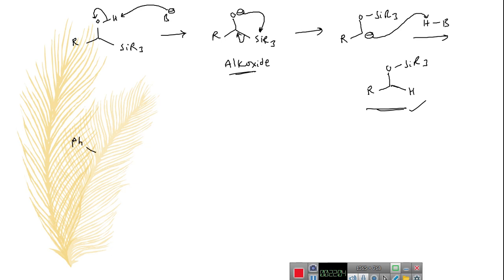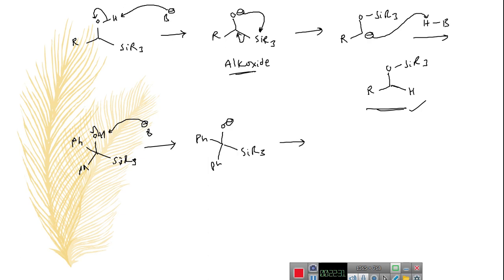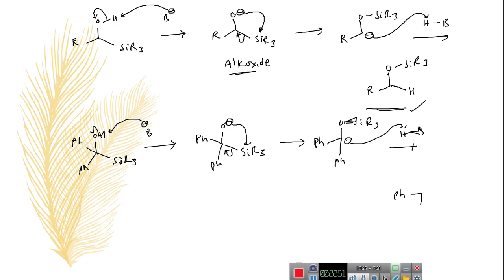For our specific example — diphenyl-substituted trialkyl silane methanol treated with base — the base abstracts the proton and forms the alkoxide, which acts as a nucleophile and attacks onto silicon, forming a carbanion. This carbanion is protonated by the base to give the required silane ether product.